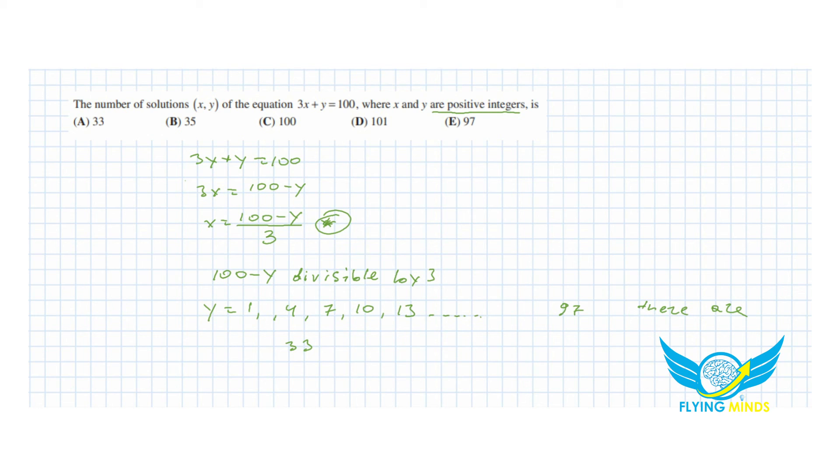If there are 33 different values of y, it means the same number of x, and the correct answer is 33.